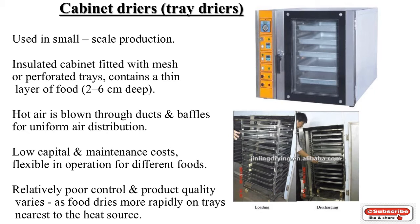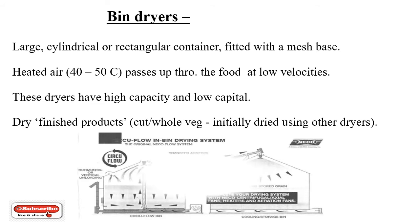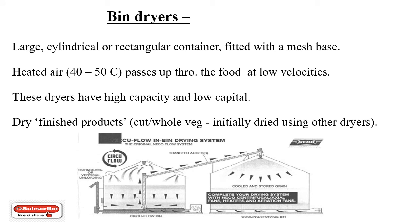The next one is the bin dryer. These are large cylindrical or rectangular containers fitted with a mesh base. Heated air around 40 to 50 degrees Celsius passes up through the food at low velocities. These dryers have high capacity and low capital cost, and finish drying products — cut or whole wedge — that were initially dried using other dryers.